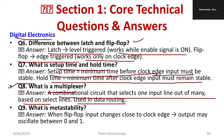A multiplexer is used for data routing in communication systems — many inputs, one output is selected. What is metastability? When a flip-flop input changes near the clock edge, the output may oscillate between zero and one. That uncertain state is known as the metastable condition.